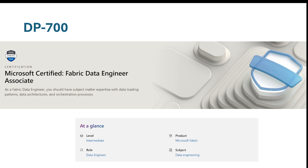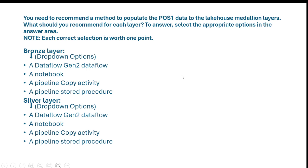Hello friends, second question of DP-700. The second question is about medallion architecture. The question is: you need to recommend a method to populate the point-of-sale data to the lakehouse medallion layers. What should you recommend for each layer — what should you use for the bronze layer, and what should you use for the silver layer?